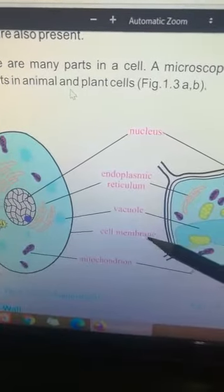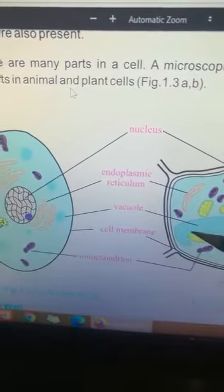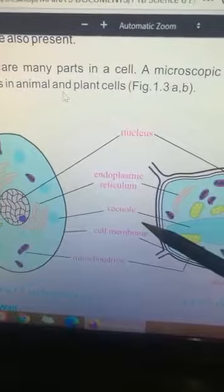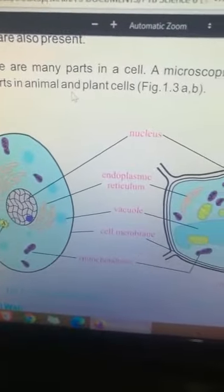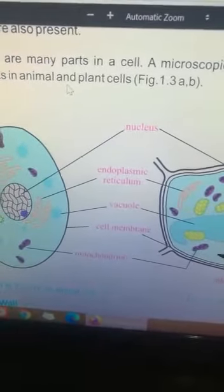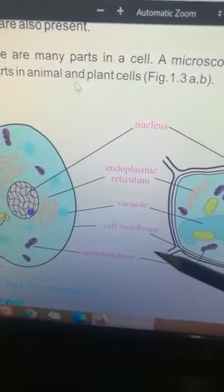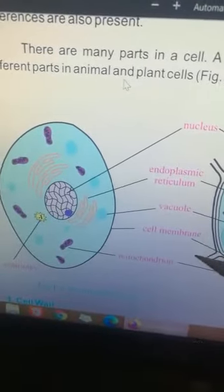There is a cell membrane. Cell membrane is also present in both animal and plant cells. Vacuoles are also present in both plants and animal cells, but the size of vacuole is different in both animal and plant cells.